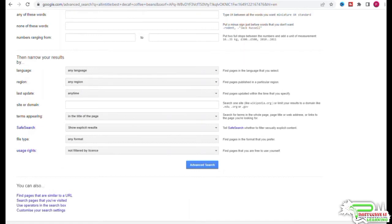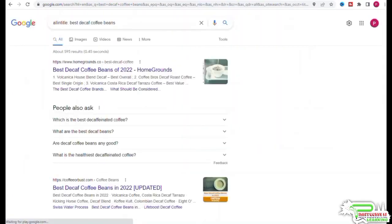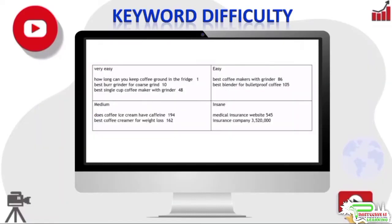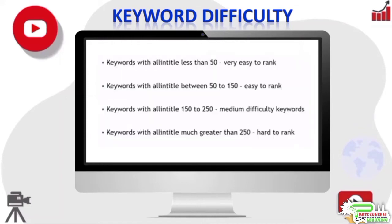You can also use Google Advanced Search to get this number — just enter your target keyword phrase and select the option 'terms appearing in the title of the page.' As a general rule of thumb: keywords with all-in-title results less than 50 should be very easy to rank; keywords with all-in-title values between 50 to 150 are still easy to rank; keywords with values between 150 to 250 should be considered medium difficulty; and keywords with all-in-title values much larger than 250 would be a lot harder to rank.